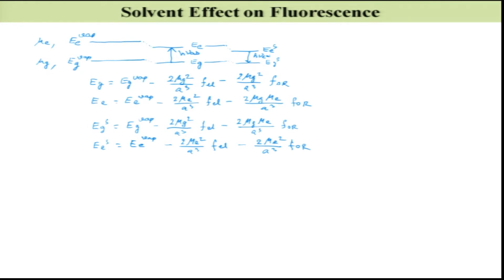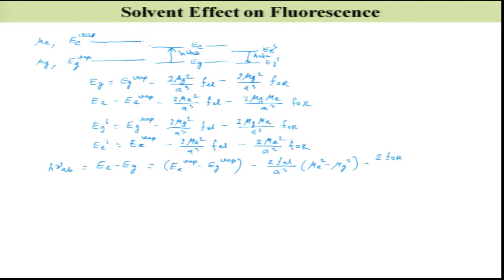Calculating hν_absorption = Ee − Eg: this equals Ee_vapor − Eg_vapor − (2·fel/a³)·(μe² − μg²) − (2·for/a³)·μg·(μe − μg). Similarly, I can calculate hν_emission.